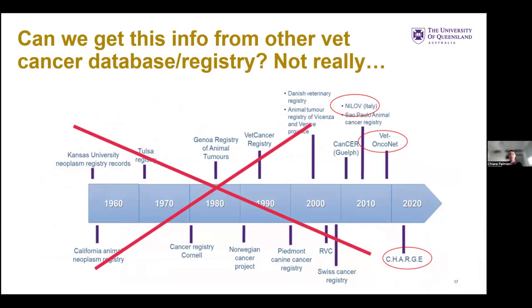Can we get this information from other cancer databases or cancer registries? Not really. I've included all the animal cancer registries reported so far — many are discontinued. But in the last few years, there has been interest in setting up cancer registries at local, national, or multi-state level, with few initiatives in Italy, Brazil, Portugal, and the U.S. However, cancer diagnosis in animals may vary by country due to breed predispositions and specific environmental factors, so we can't translate information from other countries to the Australian scenario.